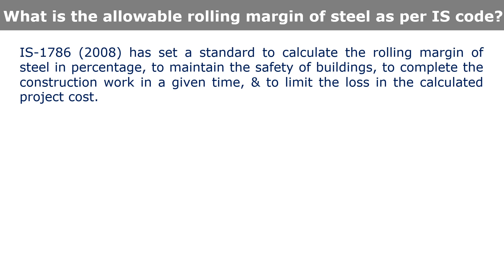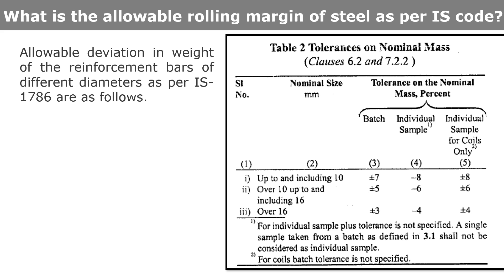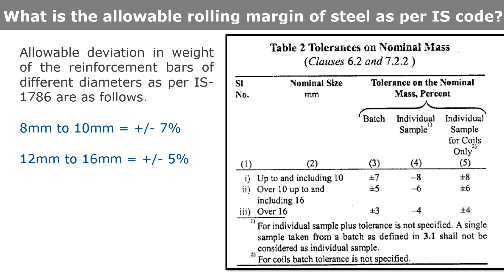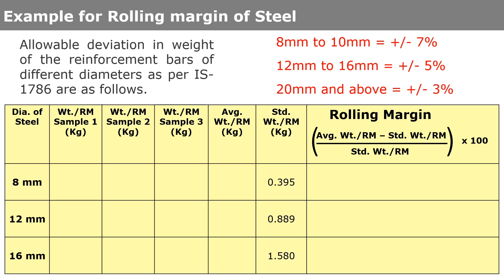What is the allowable rolling margin of steel? As per IS code IS 1786:2008, the BIS has set a standard to calculate the rolling margin of steel in percentage to maintain the safety of buildings, to complete construction work in a given time, and to limit loss in project cost. The allowable deviations are: for 8 mm to 10 mm diameter bars, ±7%; for 12 mm to 16 mm diameter bars, ±5%; and for 20 mm and above diameter bars, ±3%.